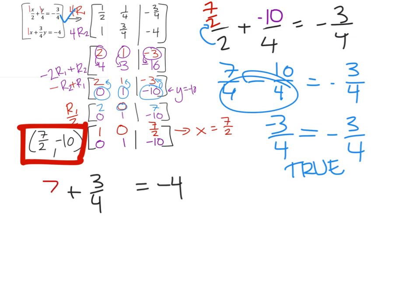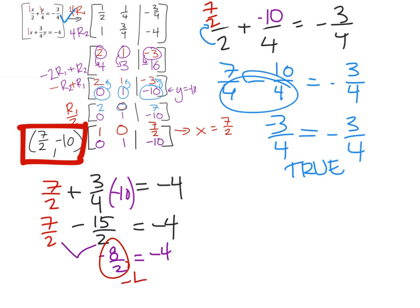In the second equation, we're going to replace x with seven halves and the y with a negative ten. And we want to make sure that this also is a true statement. Seven halves remains, but three fourths times negative ten that gives me seven halves minus fifteen halves equals negative four. And then, since we have common denominators, we can combine these. That's a negative eight halves equals negative four. And negative eight divided by two is a negative four. And negative four does equal negative four as a true statement. As it turns out, the second equation also checks off. Now, we can know for certainty that our answer is correct.